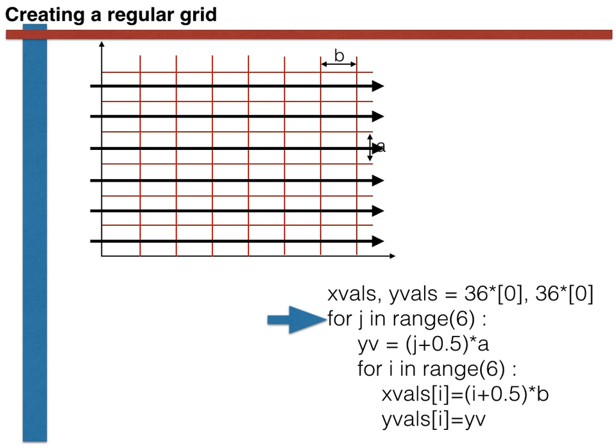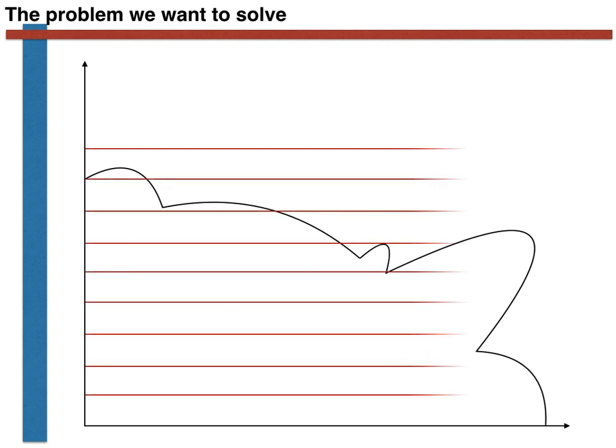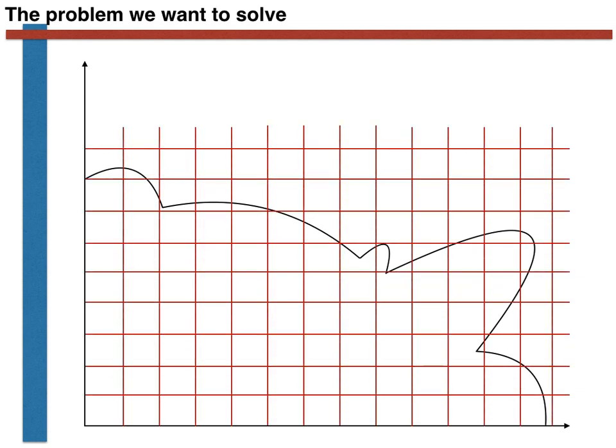Let's now recall the problem that we ultimately want to solve by generating this grid of points. We want to calculate the integral under the curve shown here numerically, and as discussed in the first video, we are going to do a three-step process in order to do this. The first step of this process will involve drawing a regular grid of squares underneath our graph as shown here.